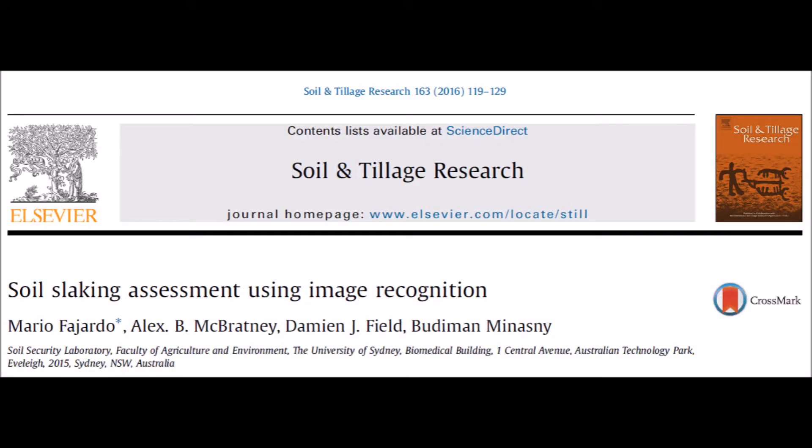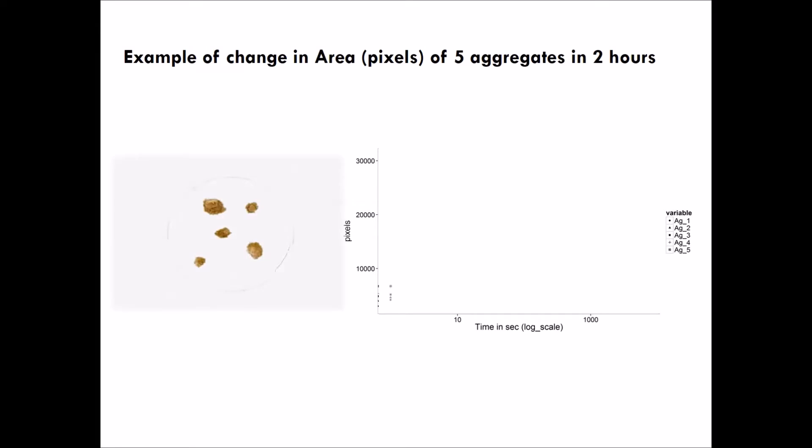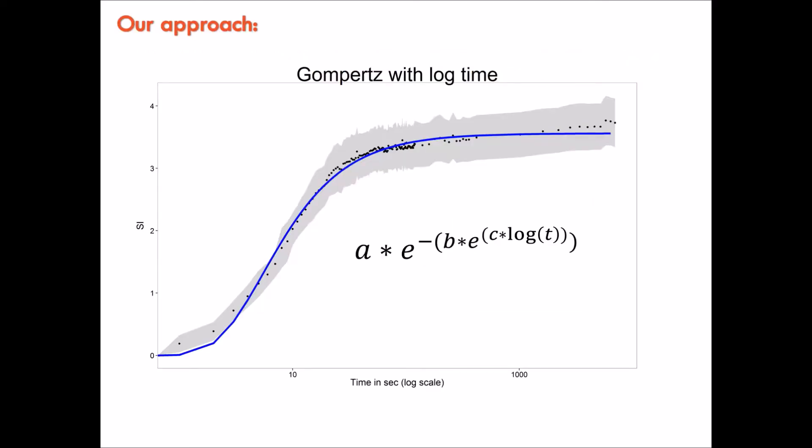Considering the importance of these properties of soils, last year we developed a new method that uses some of the basic concepts of soil aggregate stability. Let's suppose that we have a set of soil aggregates, and we could measure how they break when submerging in water. If we measured their projected area over time, we could have an idea of how stable they are.